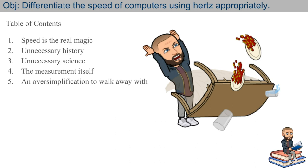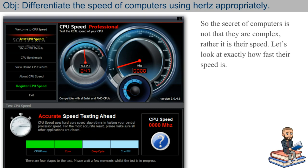However, in terms of computers, hertz is a very complex thing to think about. Why? Because it all comes down to architecture. But let me hold off on that. I don't want to freak you out right away. Let me just say that the secret of computers is not that they are complex, but rather it is the speed in which they do things. Today we'll look at exactly how fast their speed is.